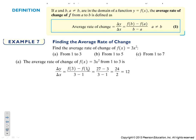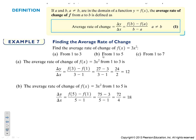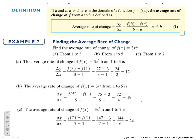Plugging in 3 and 1: we get 27 minus 3, then divide by 3 minus 1, which gives us 24 over 2, or 12. From 1 to 5: f(5) = 75 minus f(1) = 3, divided by 5 minus 1, giving 72 divided by 4, which equals 18. From 1 to 7: plugging in 7 and 1, simplifying, divided by 7 minus 1 which is 6, gives us 24.